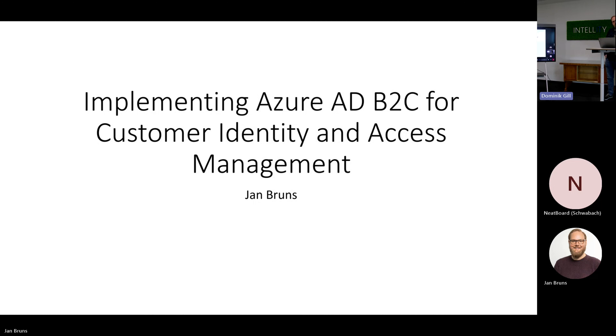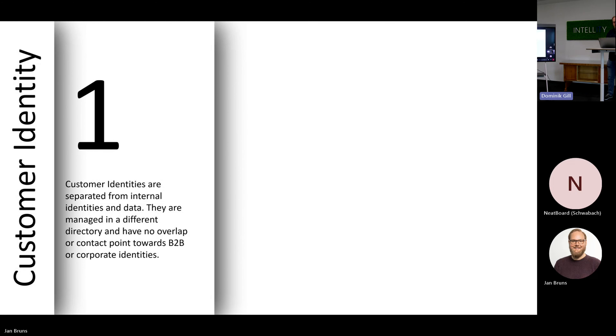The access management part is going to be a bit shorter and just mentioned briefly, because the custom identity part and the demos are going to take a bit of space there. Customer identities, or B2C identities, are separated from internal identities and B2B identities. They usually come in their own directory, with no overlap or contact points to other identities — they are separate and managed separately from internal identities with internal accesses.